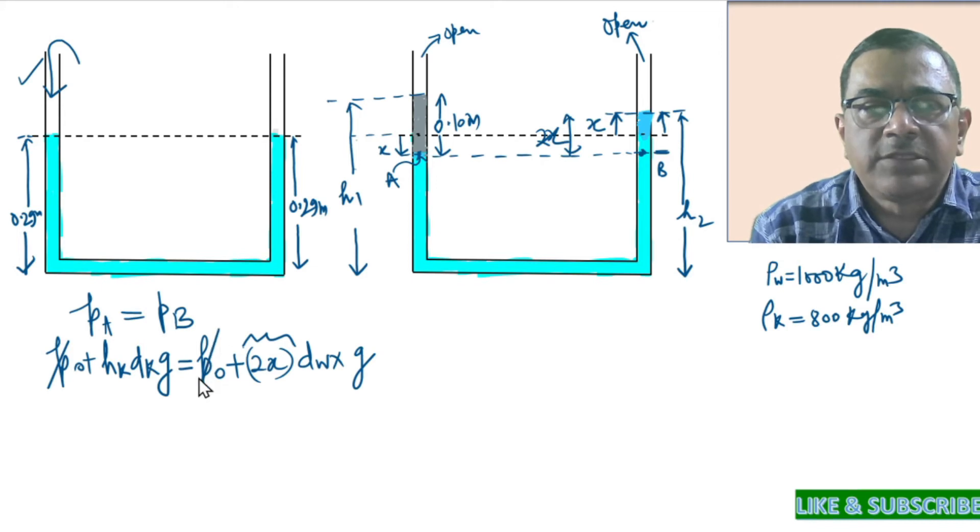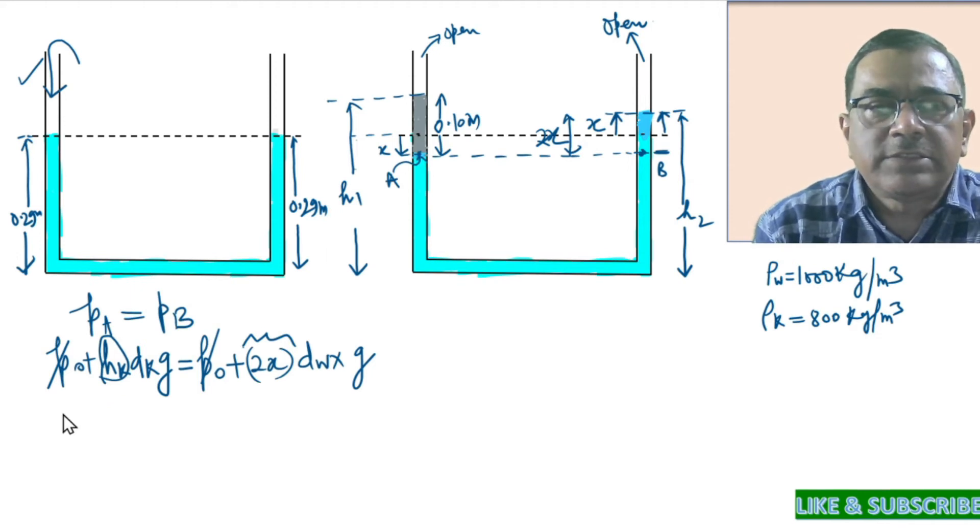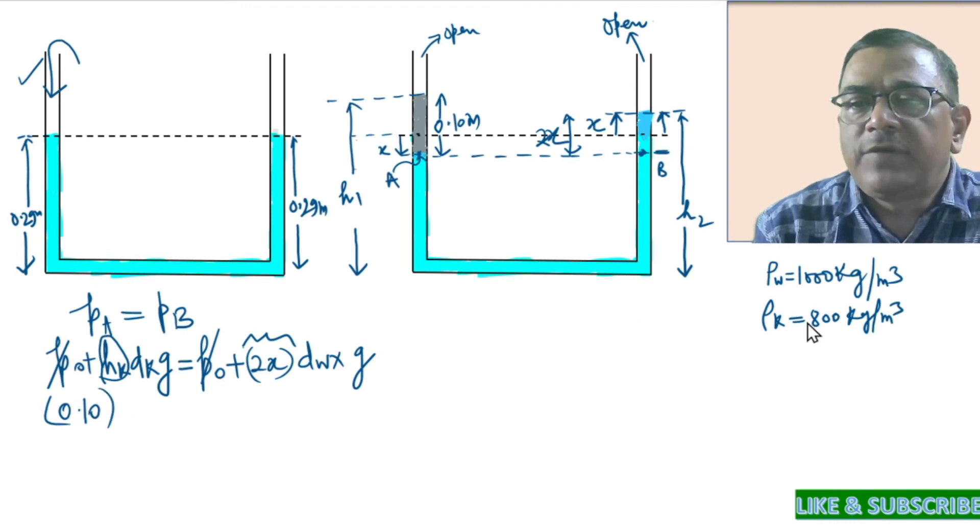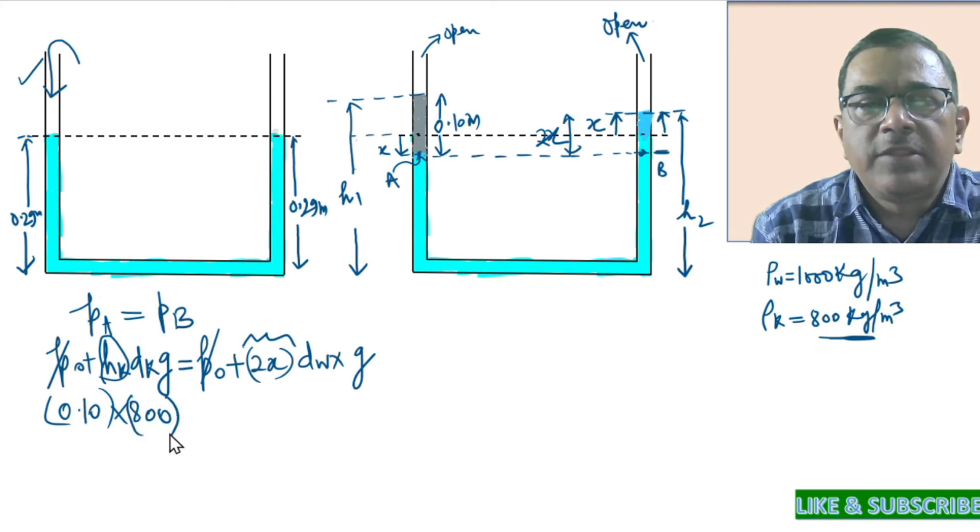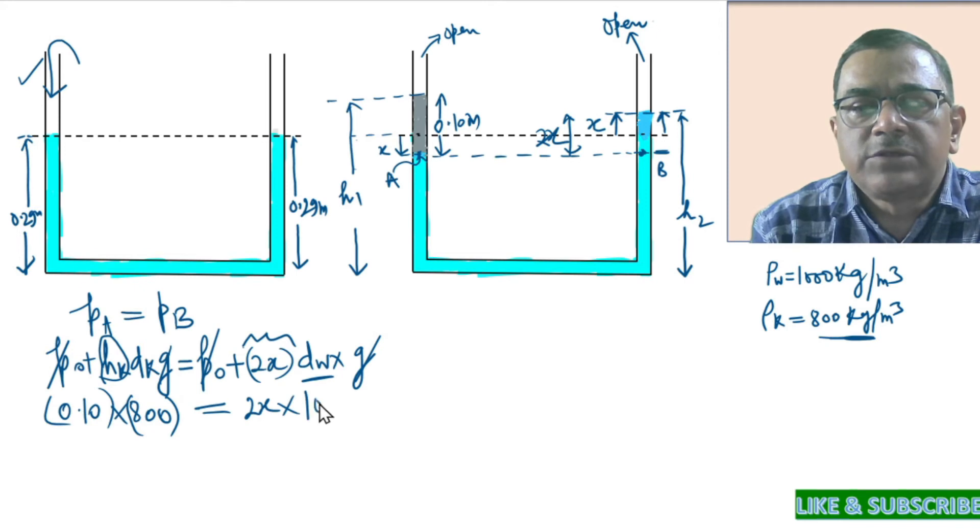P0 and P0 cancel. The height of kerosene above point A equals 0.10. The density of kerosene is given in the problem as 800 kg per meter cube, and the value of G will be cancelled. So this equals 2X times the density of water, which is 1000.